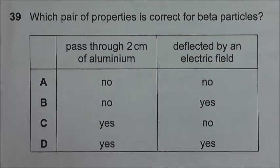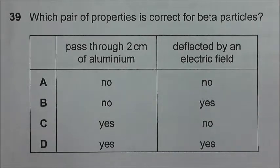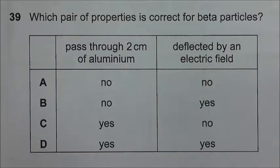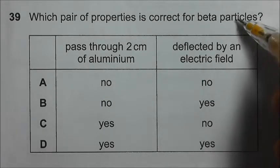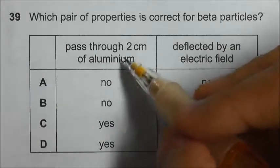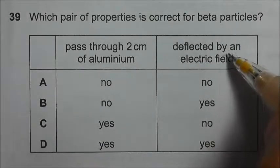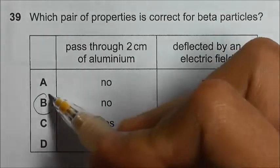This is a question on nuclear physics and it is out of syllabus since 2008. This is a recall question. We need to understand the properties of a beta particle. It cannot pass through 2 cm of aluminum and it is deflected by an electric field. So the answer should be B.